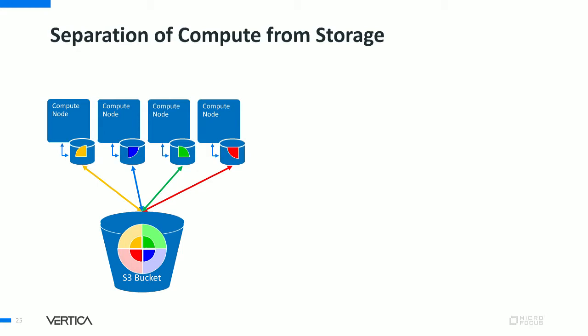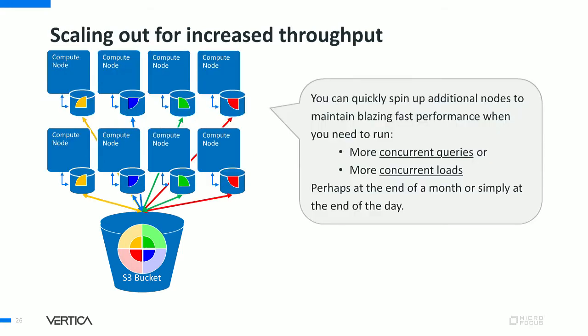The active working set is the hot data, and that's how large you want to size your depot. By architecting this way, when you scale up you're not re-segmenting the database. Instead, you're adding more compute and more subscriptions to the existing shards. In this case, adding a complete set of four nodes doubles capacity and subscriptions — now two nodes can serve the yellow shard, two nodes can serve the red shard, and so on — allowing you to run twice as many queries in the same amount of time, doubling concurrency.